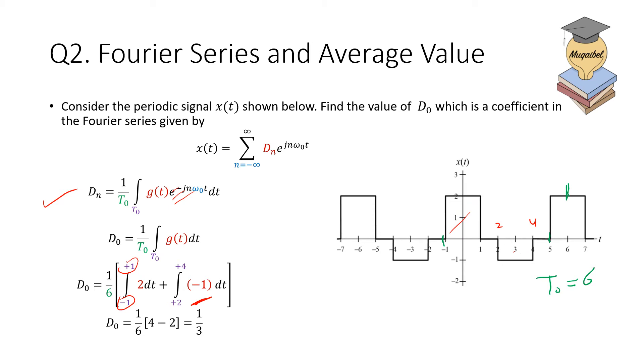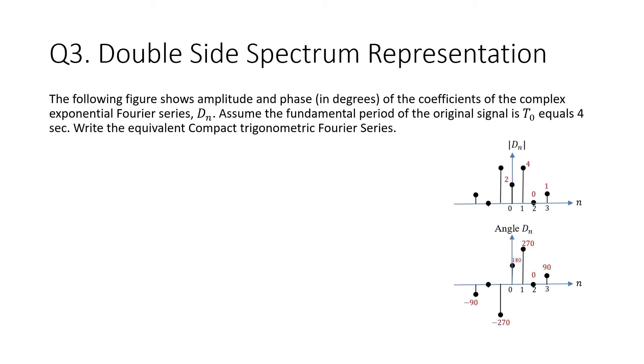So the correct answer is one third. We could have done this by inspection just by looking at the average value. Take one full period, let's say from here to here, and then you just find the area under the curve and divide by the period, which is six. So we have 4 minus 2, which is 2, divided by 6, and you get one third. Now let's move to the third question.